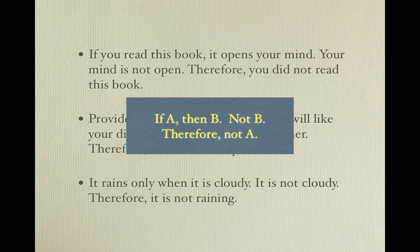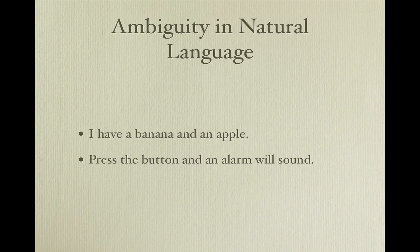Why bother looking at the logical argument form as opposed to just an argument in natural language? Well, it turns out that natural language has ambiguity inherent in it. If we look at an argument in a naturally occurring language — such as English, French, or Ojibwe — ambiguities tend to crop up. Consider: 'I have a banana and an apple' versus 'Press the button, and an alarm will sound.' In the first statement, AND functions as a conjunction — the statement is true if I have both. In the second statement, AND functions completely differently; it is difficult to know what its function is. Perhaps it is a warning or an enticement: if the button is pressed, then an alarm will sound. This use of AND is quite different from the first.